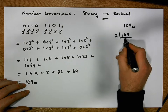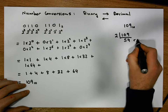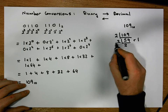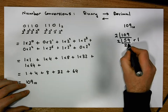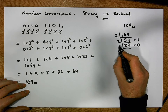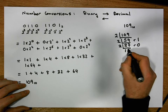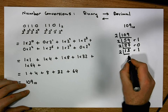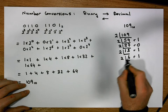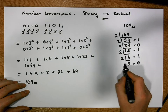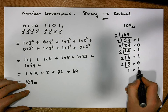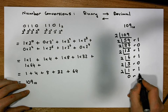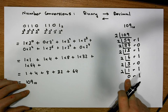So: 2 into 109 goes 54 times with a remainder of 1. 2 into 54 goes 27 times with a remainder of 0. 2 into 27 goes 13 times with a remainder of 1. 2 into 13 goes 6 times with a remainder of 1. 2 into 6 goes 3 times with a remainder of 0. 2 into 3 goes once with a remainder of 1. 2 into 1 won't go, with a remainder of 1.